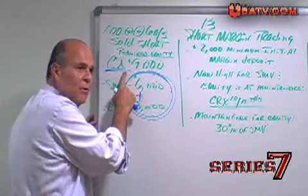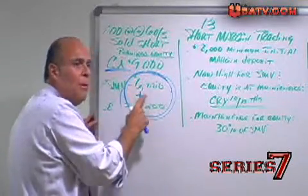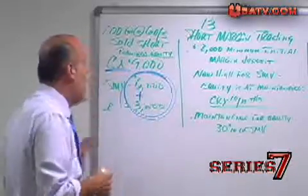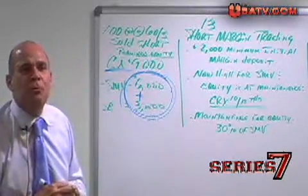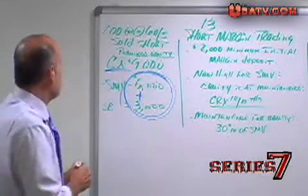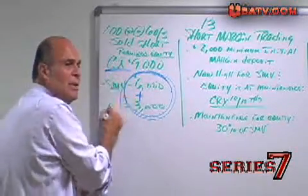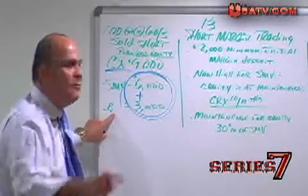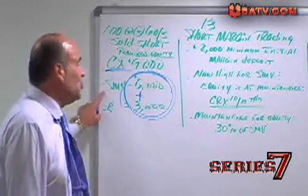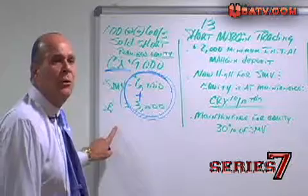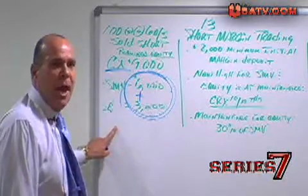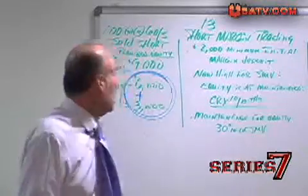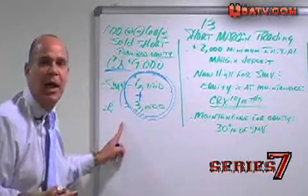The credit balance is the short market value plus the client's margin deposit on the short market value — $9,000 coming into the account. To find equity on the short side: CR minus SMV equals E. To compare: on the long side, LMV minus DR equals E; on the short side, CR minus SMV equals E.